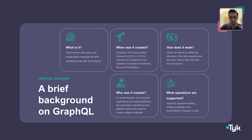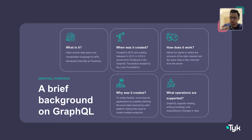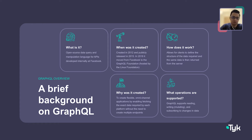Comparing to REST APIs: GET maps to queries, and mutations map to POST, PATCH, PUT, or DELETE operations. Today we are going to be looking at queries only — not mutations, not subscriptions. If you're interested in those, leave a comment or send us an email and we'll be happy to do a separate webinar covering those capabilities.